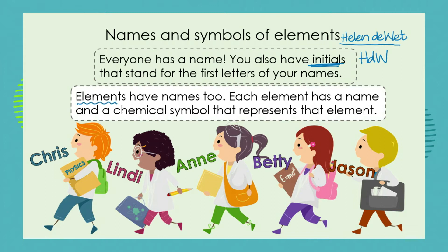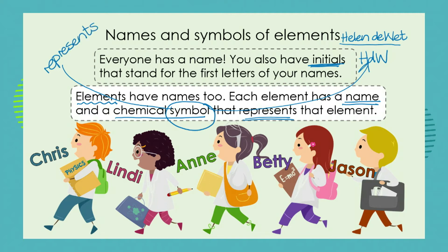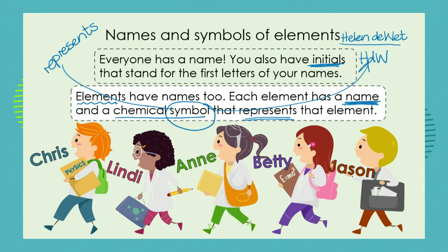And in the same way, elements have their names — oxygen, hydrogen, carbon, sodium. These are some of the names of the elements that we have mentioned previously. So each element has a name, but it also has a chemical symbol, very much like your initials, that represents the element. So when we talk about a symbol, we mean something that stands for something else or represents something else.